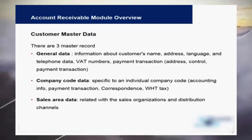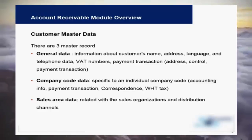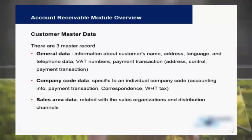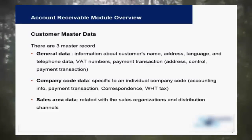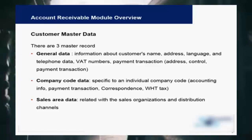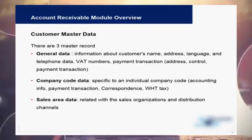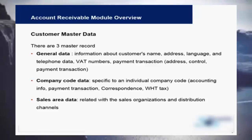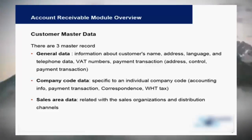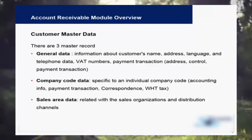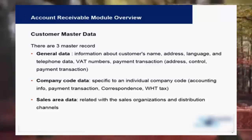Similar to vendor master data, customer master data also has three parts: general data, company code data, and sales area data. General data covers all information independent of the company code — for example, the customer's name, address, language, communication details, VAT number, and bank data.